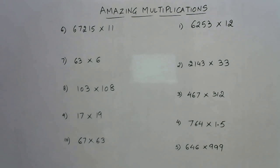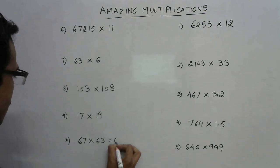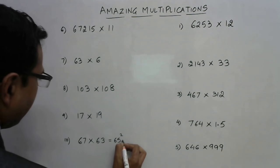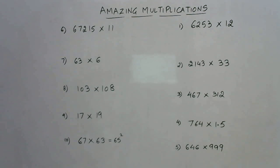I will go for the first question, 67 into 63. How do we do this? See the gap between these two is very less, only 4. So just take the number which is in between them. 63 and 67, that exact central number is 65. So you just need to know the square of 65 and then this problem will be a very easy problem for you.